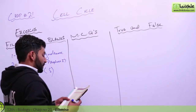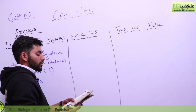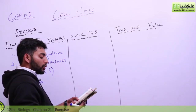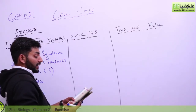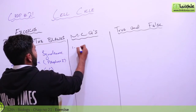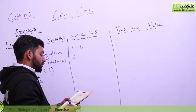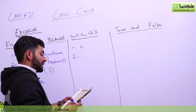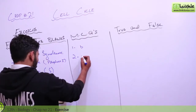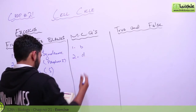Now we move to MCQs. First question on Klinefelter's syndrome: the answer is B — an additional X chromosome is present. Second question: mitosis is divided into karyokinesis, cytokinesis, interphase, or both A and B. The answer is D — both A and B.